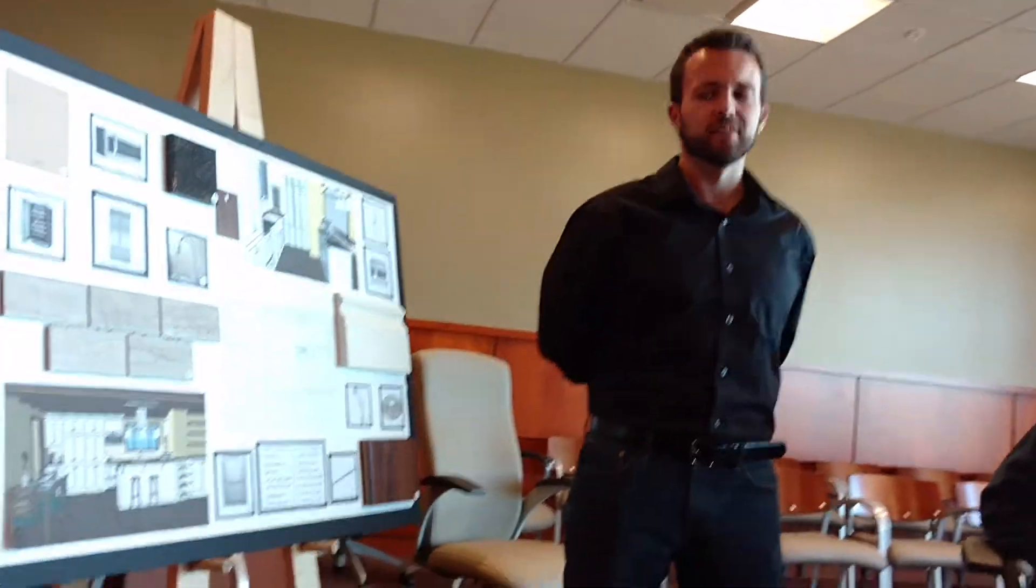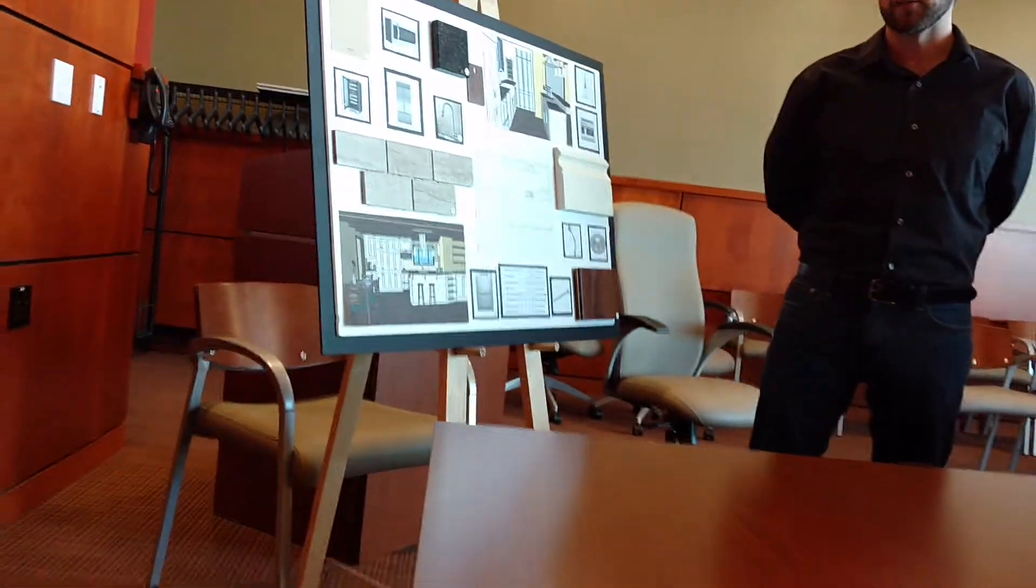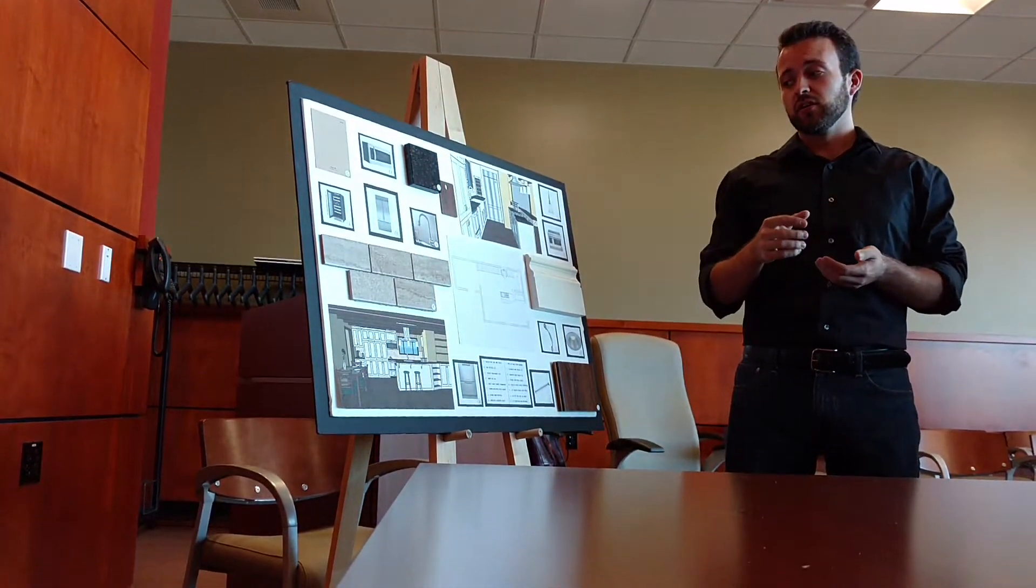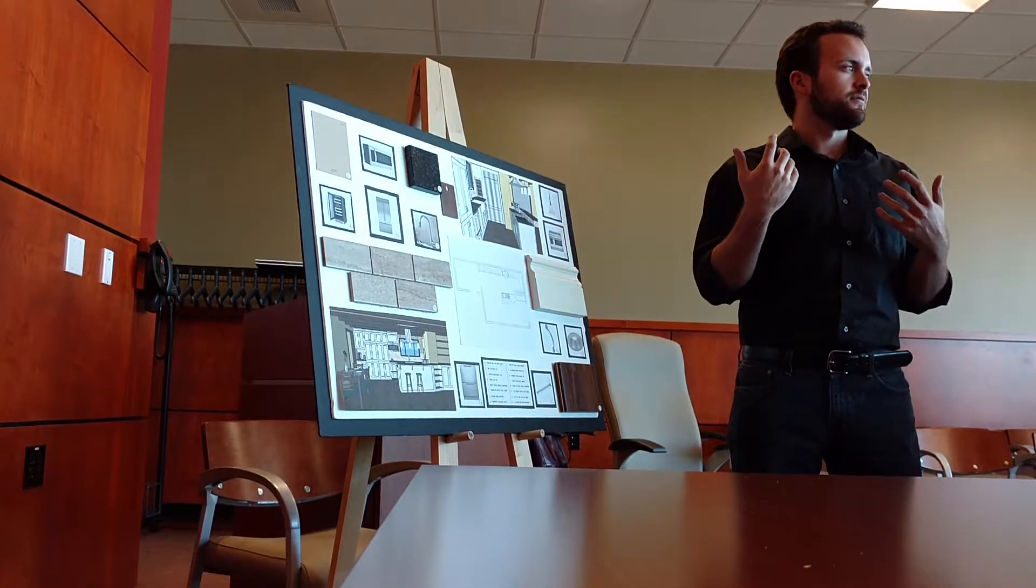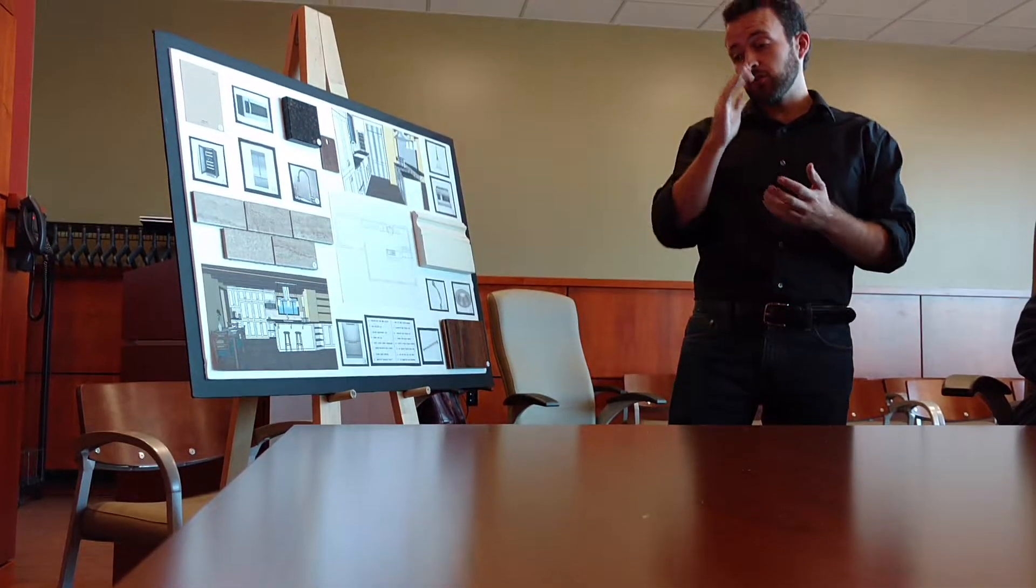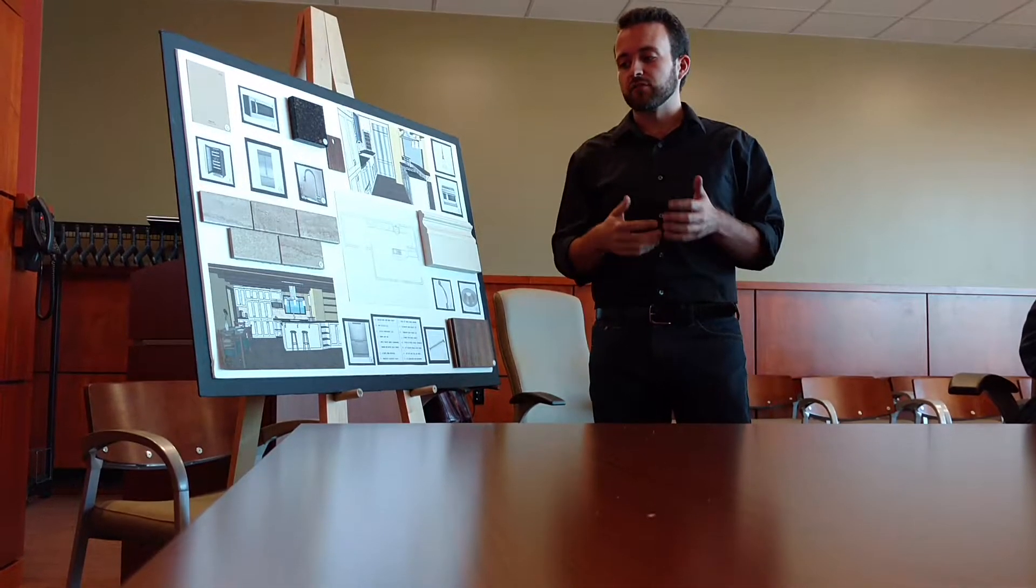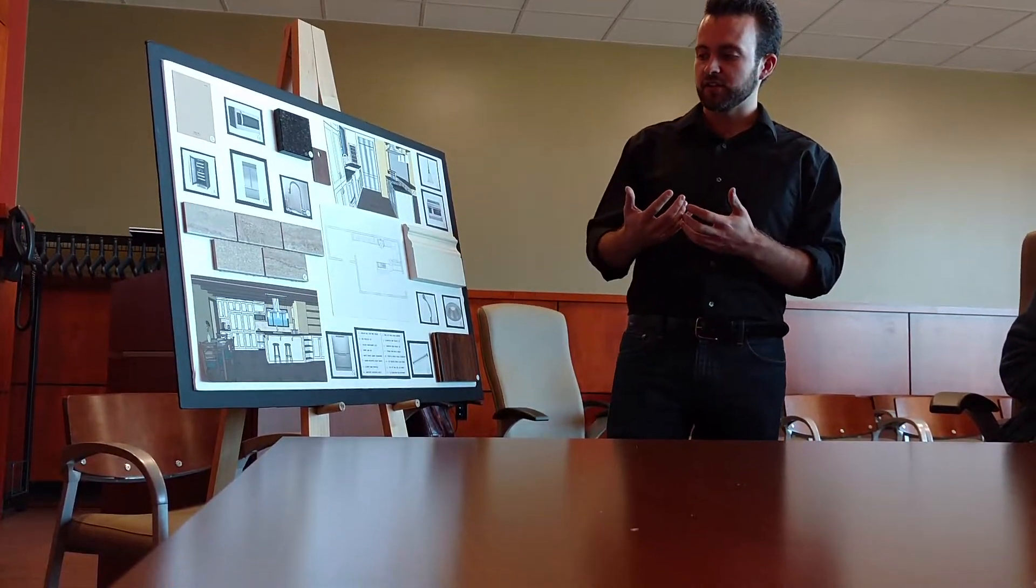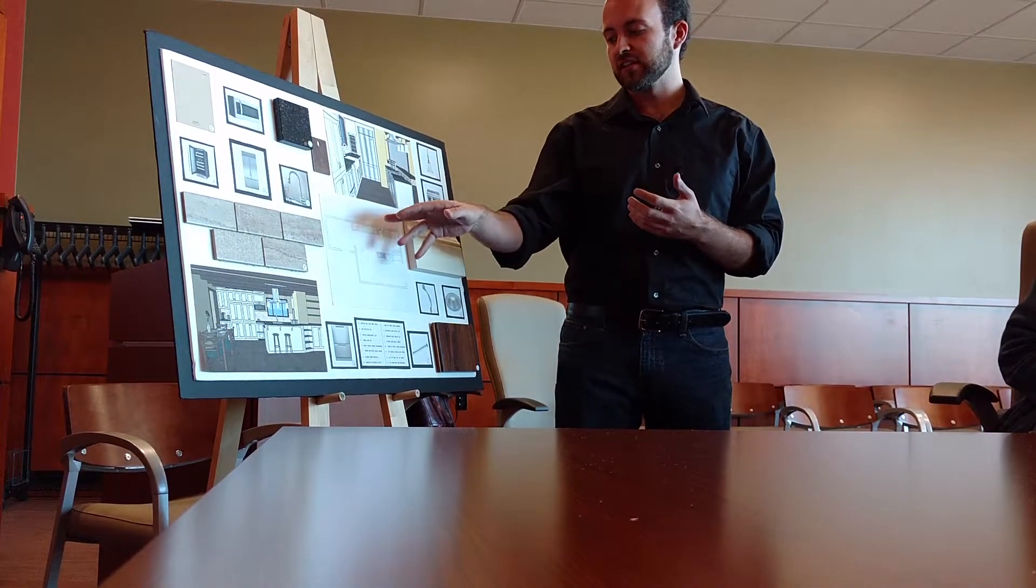The main challenge was working with the permanent chimney that was there and having to work a design around that chimney that both functioned, looked nice, and was pleasant to look at. So after a little research, I designed essentially a small U-shaped kitchen in this space.